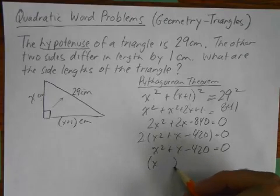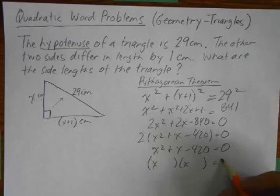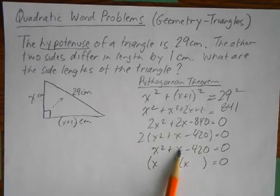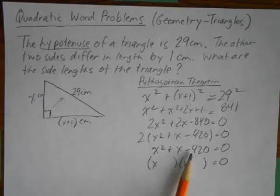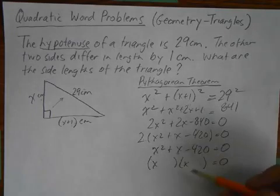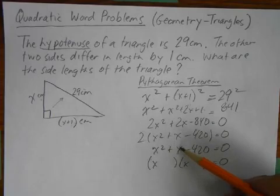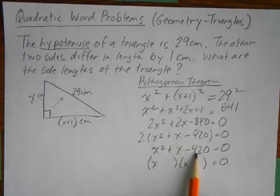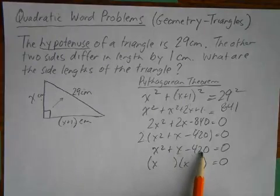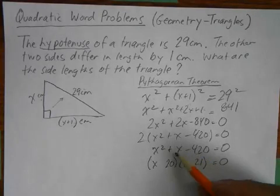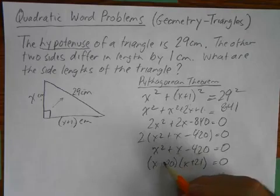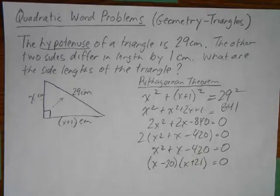I'm going to have two factors with an X. And I know the two numbers I'm looking for are basically one apart. Because when I add them together, I get 1. And when I multiply them, I get negative 420. So the higher number is going to be positive, the lower one's negative. And two numbers that are one apart that multiply to this would be 20 and 21. And the higher number has to be positive.